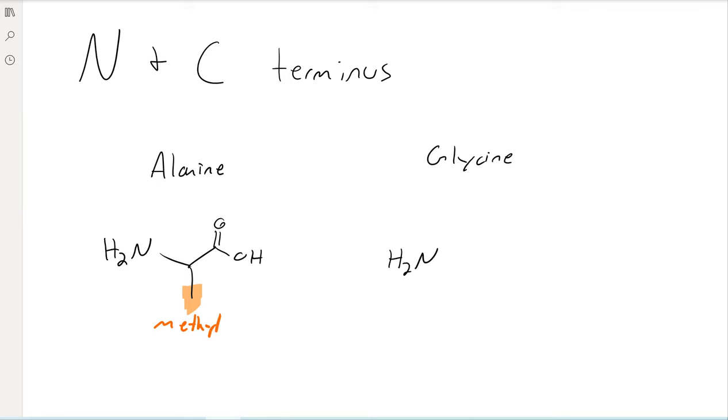And then for glycine, again, we've got an amino acid. So there's the amine, the alpha with the R group. In the case of glycine, the R group is just a hydrogen, so even simpler. And then, of course, the acid.